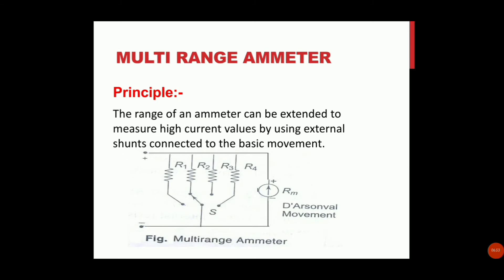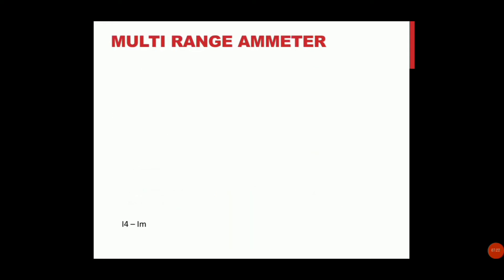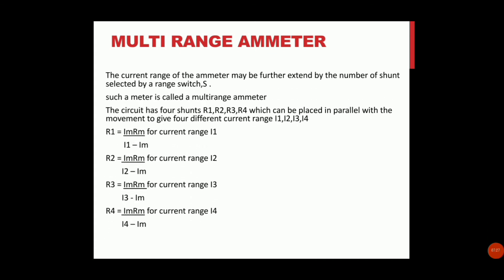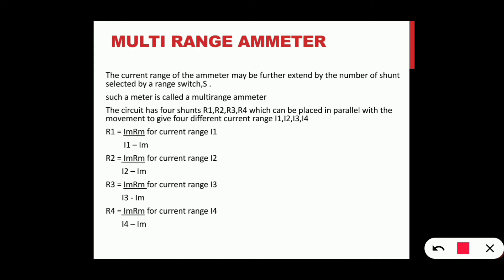Let's take the principle of the multi-range ammeter. The range of the ammeter can be extended to measure high current values by using external shunts connected to the basic movement. We can choose the shunt resistance as Im × Rm divided by (I1 - Im).